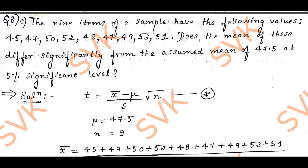They have given 9 items of a sample with the following values: 45, 47, 50, 52, 48, 47, 49, 53, 51. Does the mean of these differ significantly from the assumed mean of 47.5 at 5 percent level of significance?